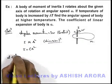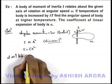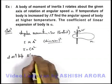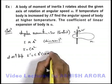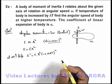At ΔT higher temperature, the new moment of inertia I' can be written as cr²(1 + αΔT)² whole square. This relation we can use.